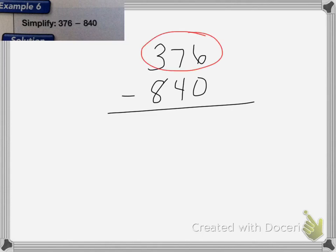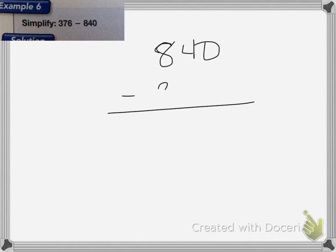With this next problem, it wants me to simplify this equation. So 376 - 840. Well, I know my answer is going to be negative, because the top number is smaller than the bottom number. So to make this simpler, and simplify it, I'm going to switch my two numbers around. That will make it a lot easier to subtract. So I'm going to do 840 and subtract 376. And I'm just going to remember that my answer has to be negative, because 376 is my first number, and it's smaller.